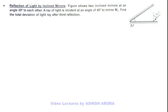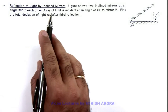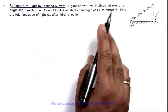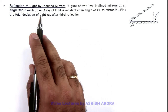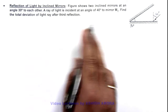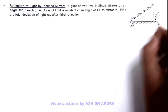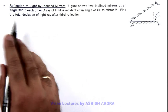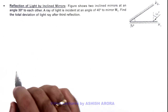In this illustration we'll discuss reflection of light by inclined mirrors. The figure shows two inclined mirrors at an angle of 30 degrees to each other. A ray of light is incident at an angle of 40 degrees to mirror M1. If the second mirror is M2, we are required to find the total deviation of the light ray after the third reflection.